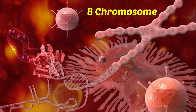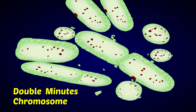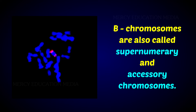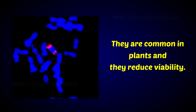Examples of unusual chromosomes include B-chromosomes and double-minutes. B-chromosomes are also called supernumerary and accessory chromosomes. They are additional chromosomes found in some individuals in a population, for example in maize. They are common in plants and they reduce viability.